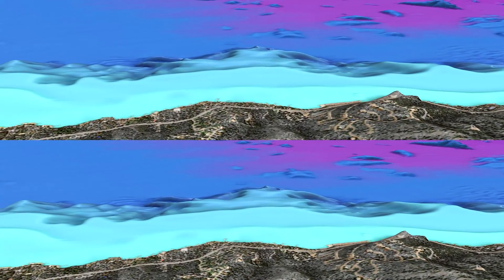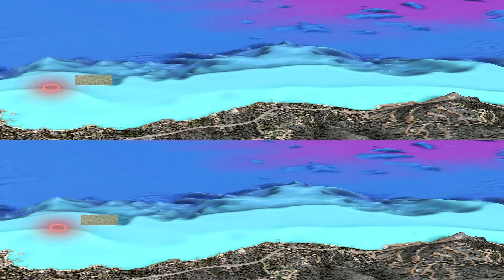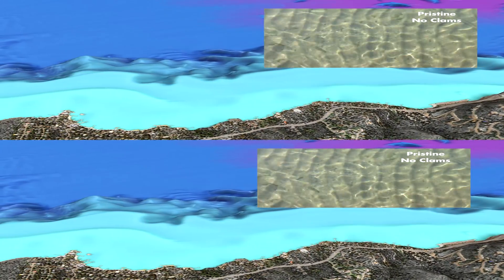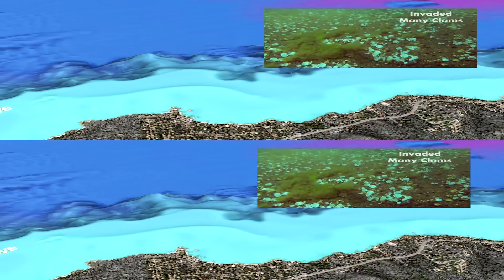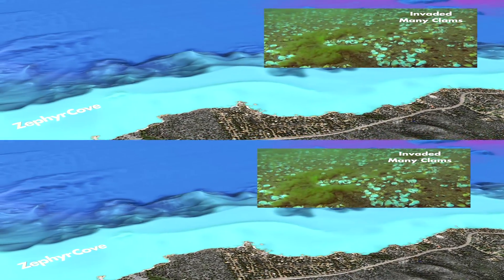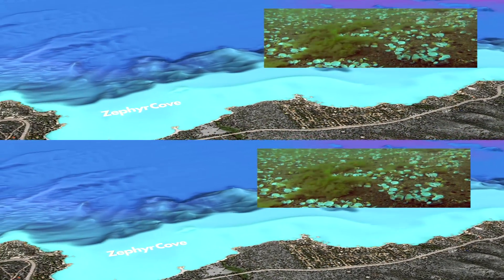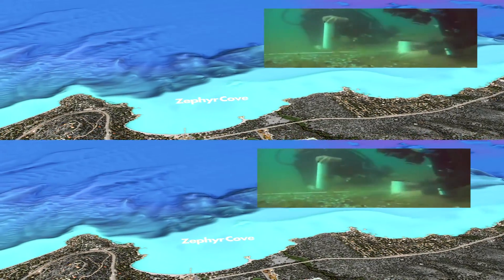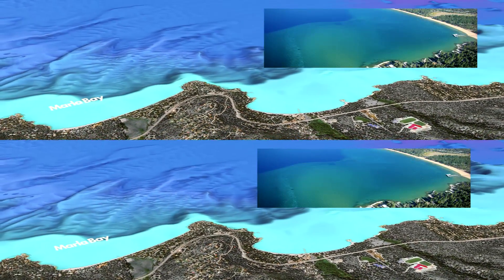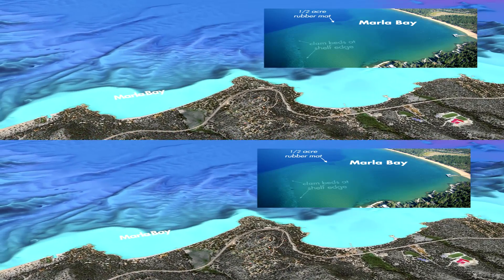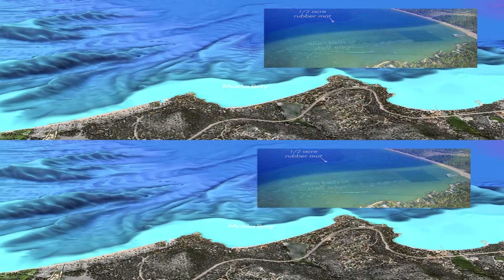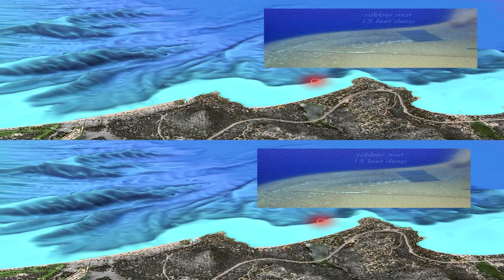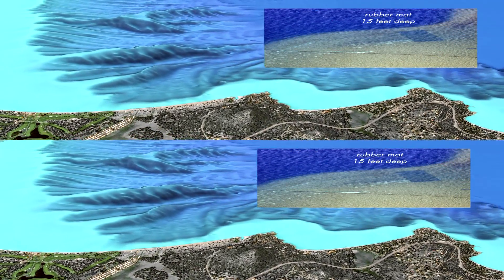The bays along the southeast corner of the lake have been invaded by Asian clams. Non-native Asian clams were first spotted in Lake Tahoe in 2002. Since then, the populations have increased immensely. The abundant clams concentrate nutrients that stimulate algal blooms. These clams are changing the underwater landscape. Researchers are working together with basin managers on experiments to control clam populations.